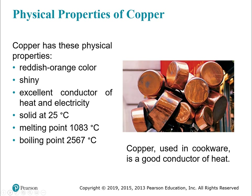Examples of physical properties for copper: you can observe its reddish-orange color, note that it's shiny, and identify that it's a solid at room temperature. Copper is also a great conductor — cookware uses copper because it conducts heat well, and the wiring in your house is copper because it conducts electricity well. You can heat it up to find its melting point, and keep heating to find its boiling point. Those are all physical properties of copper.